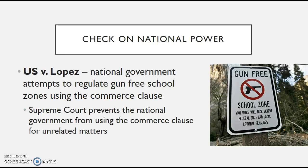This major check came in a 1995 case called U.S. v. Lopez, in which the national government attempted to regulate a gun-free zone using the Commerce Clause. Does the Commerce Clause have anything to do with regulating gun-free school zones? The Supreme Court ruled that this was power unchecked by the national government and that the national government cannot use the Commerce Clause for unrelated matters that don't have anything to do with commerce.